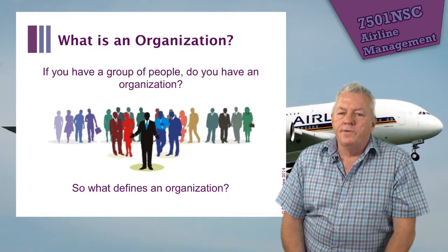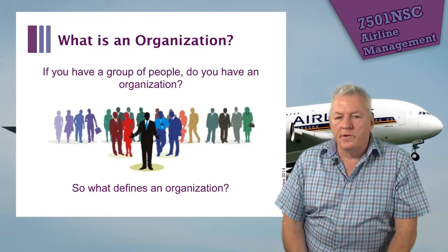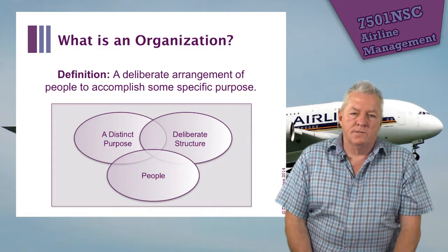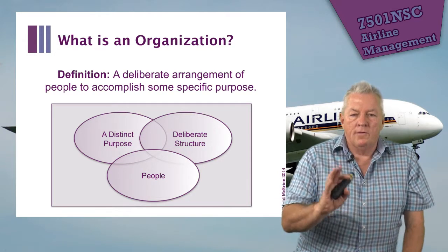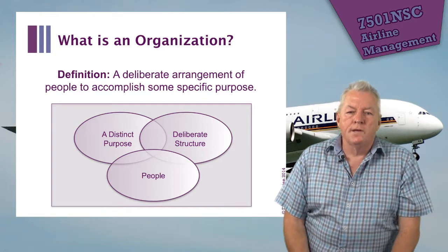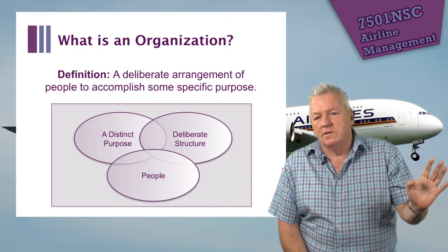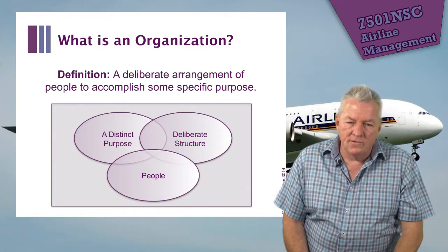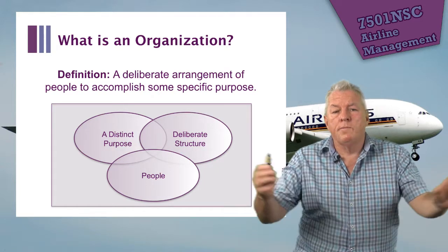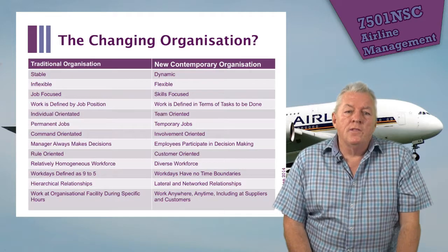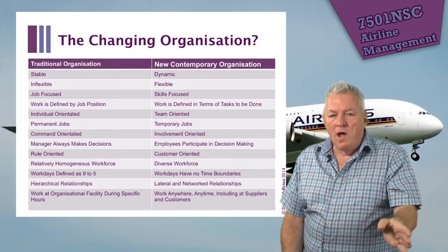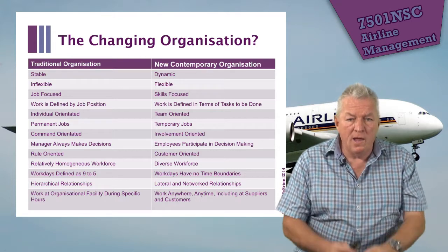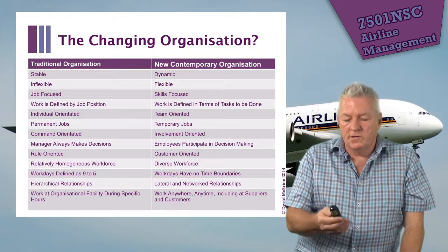What is an organisation? We all use this term, and the definition is: a deliberate arrangement of people to accomplish some specific purpose. The three elements are a distinct purpose, a deliberate structure, and people. Examples include Griffith University and Virgin Airlines. Organisations can exist individually or within group structures, and range from traditional, stable forms to more contemporary, dynamic ones.